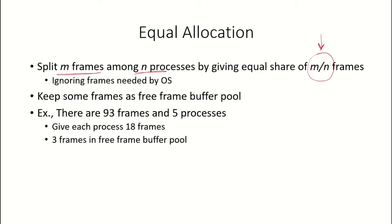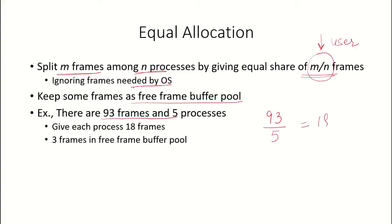We are only considering frames available to user processes, not those needed by the operating system. Each process gets its M/N share, and the remaining frames are kept in a free frame buffer pool so that if any process requires an additional frame, it can be provided. For example, with 93 frames and 5 processes, equal allocation gives each process 18 frames (93 ÷ 5 = 18), and the remaining 3 frames are kept in the free frame buffer pool for emergency demand.